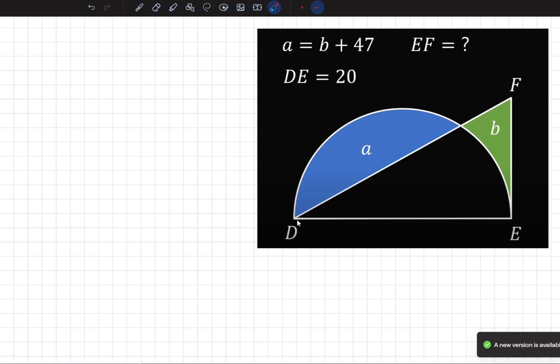So it says that A, which is this area right here, that's equal to B plus 47. It says DE is 20, so this semicircle length. Meaning the radius length is 10.